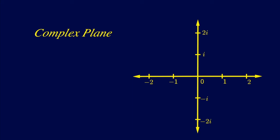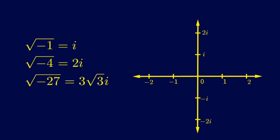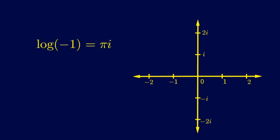But it also extends the domain of many common functions. We've already seen this with the square root. But it does the same for functions like the natural logarithm. For example, the natural log of negative 1 is pi i.